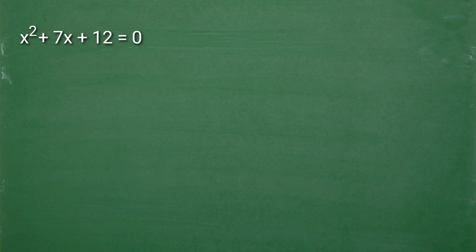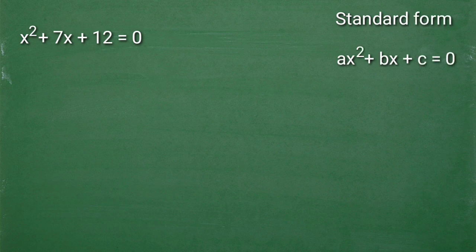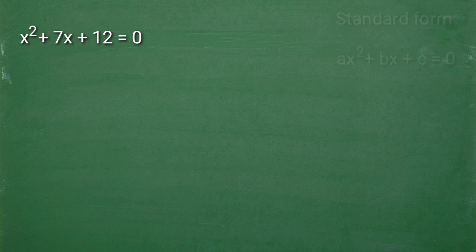Kapagka-factor natin, dapat ang quadratic equation natin ay nasa standard form. ax squared plus bx plus c is equal to 0. So dapat nasa left side yung may x squared, then yung x, at yung constant. At dito sa example natin, wala namang problema dahil naka-standard form na siya.